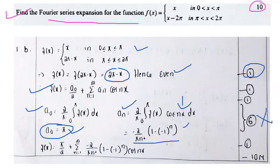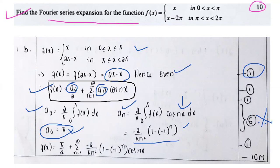Now we have to work on a_n. To calculate a_n: 2 by pi times integral from 0 to pi of f(x) cos(nx). You will be getting a_n equal to minus 2 by pi n squared times (1 minus (minus 1) to the power n). This core part carries 6 marks. The main segments are computing a0 and a_n, giving 6 marks. Then substitute combinedly — you will be getting another 1 mark, so totally 10 marks.